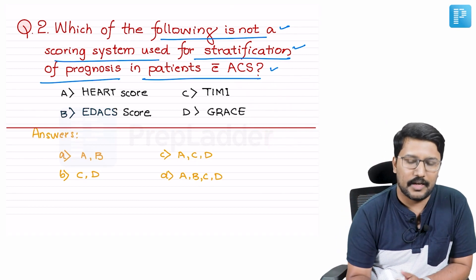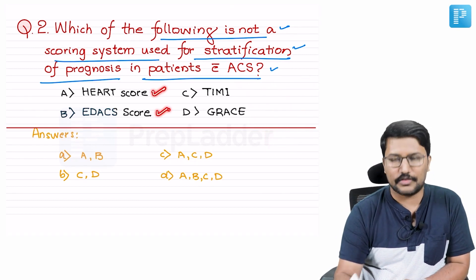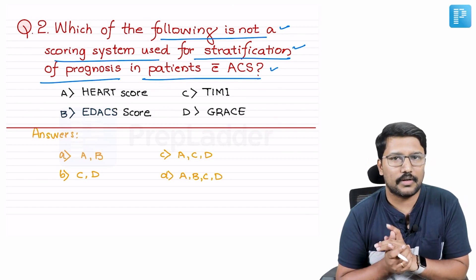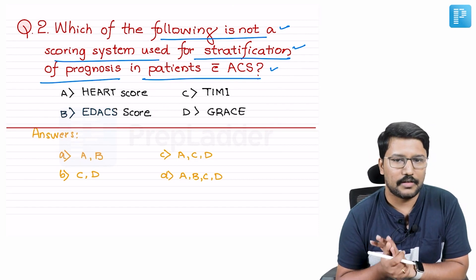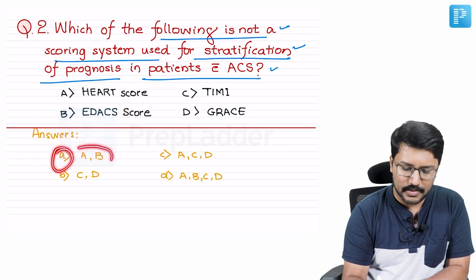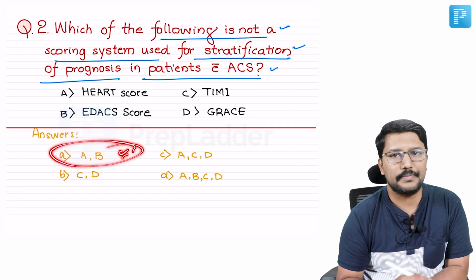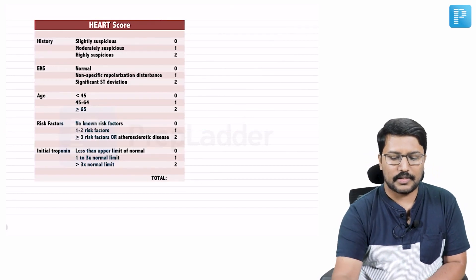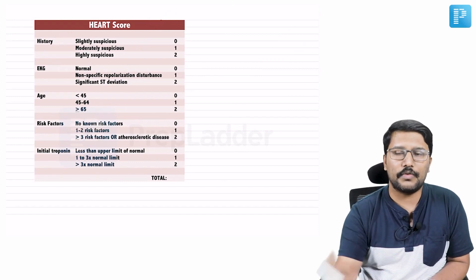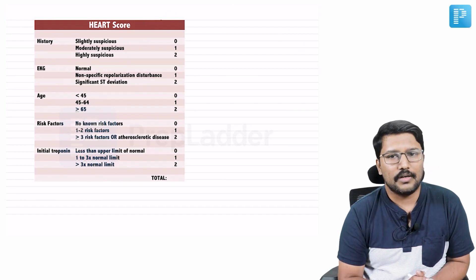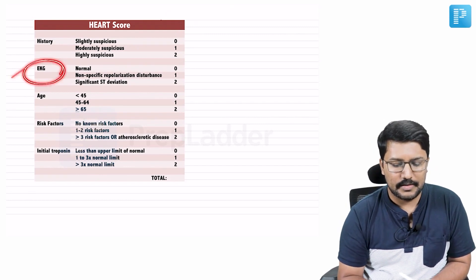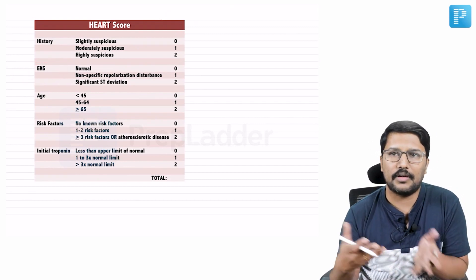What about options A and B — HEART score and EDACS score? HEART score and EDACS score are basically used for understanding the risk of acute coronary syndrome in a patient presenting with chest pain. So the correct answer encompasses options A and B. HEART score looks at history — whether history is suspicious of acute coronary syndrome: highly, moderately, or slightly suspicious — and a score is given.